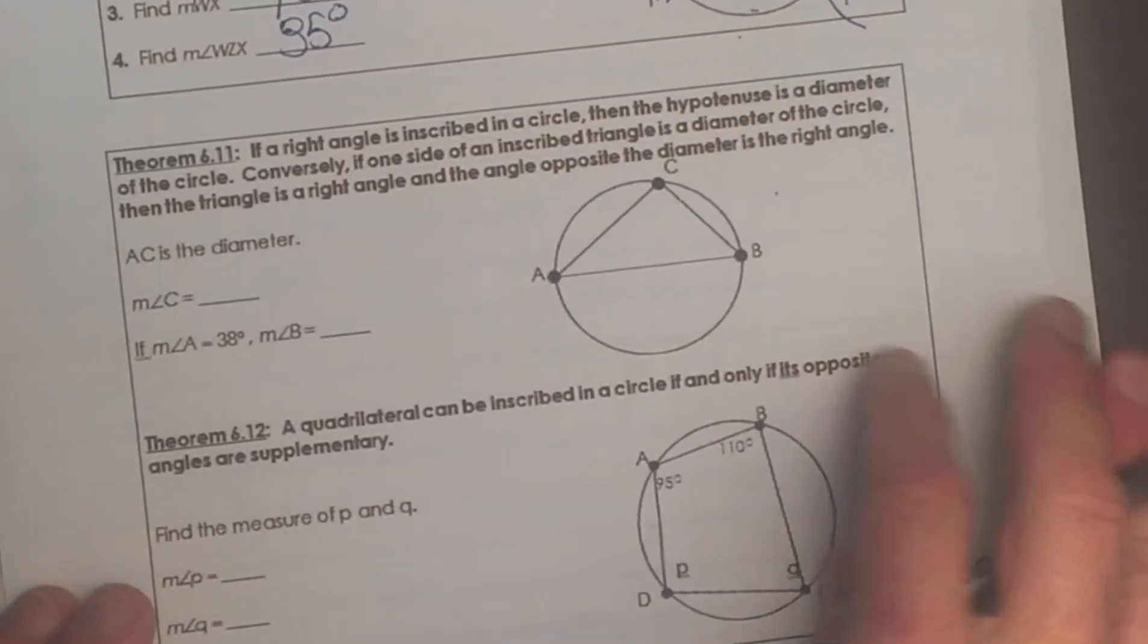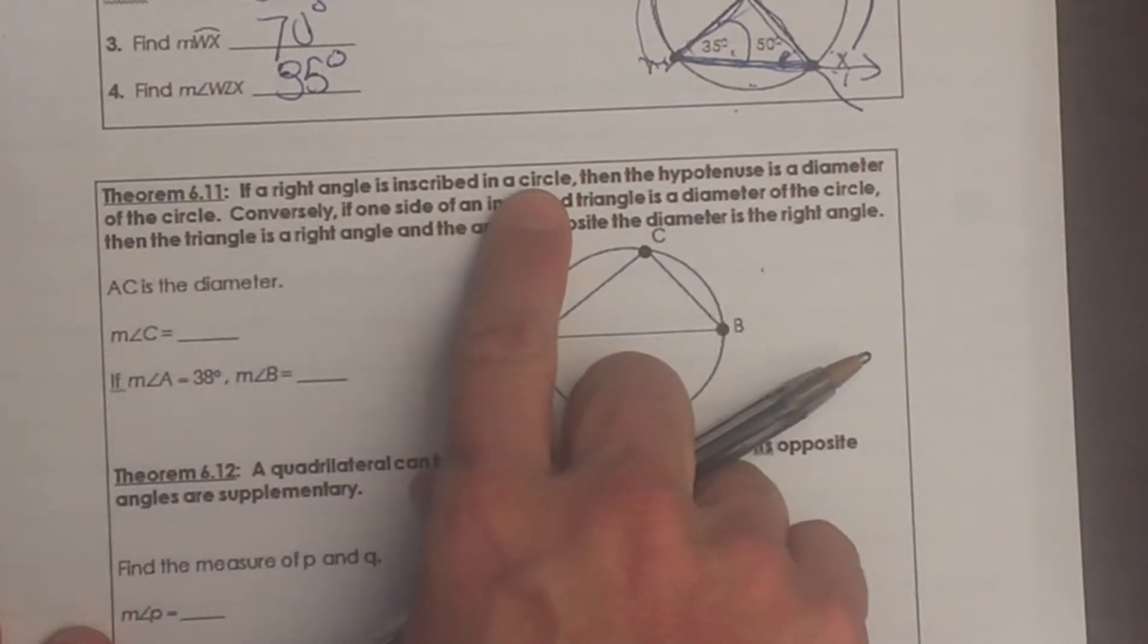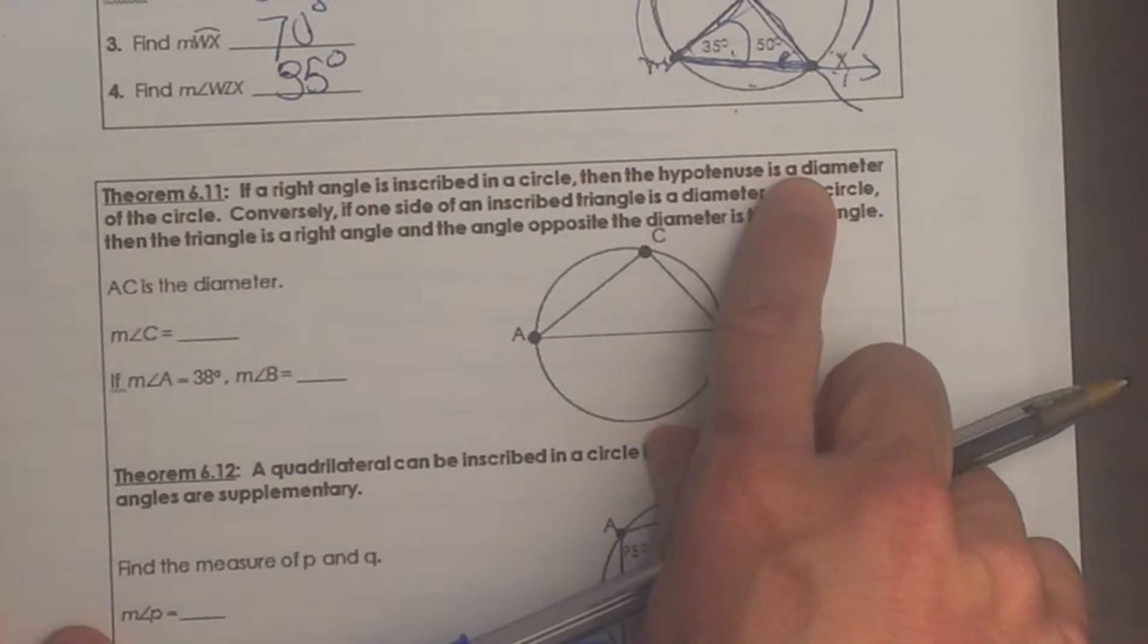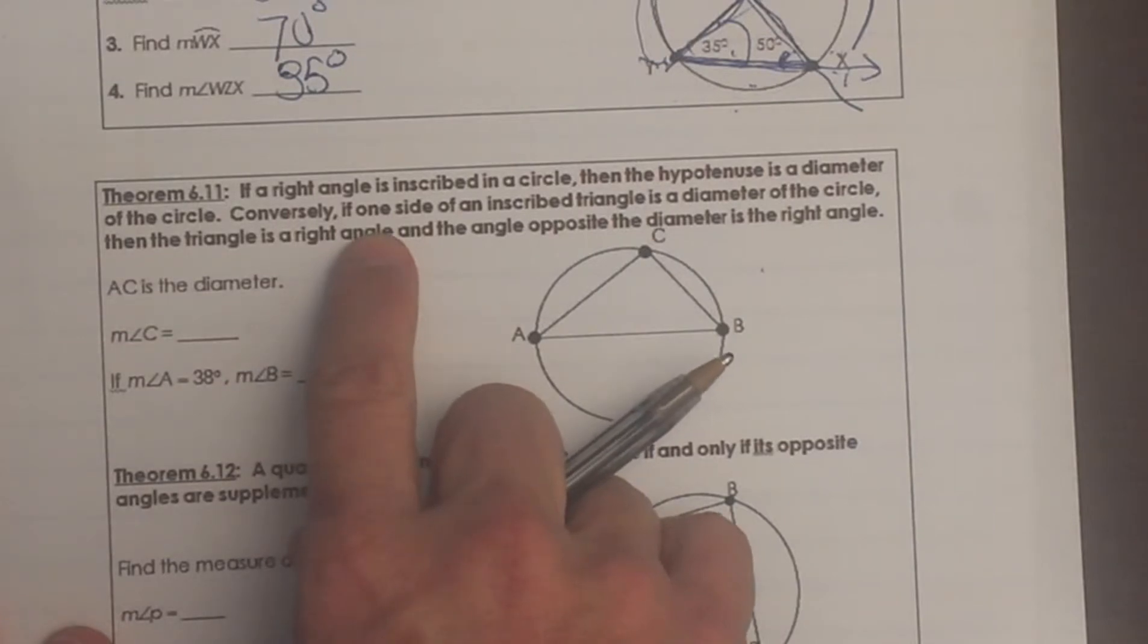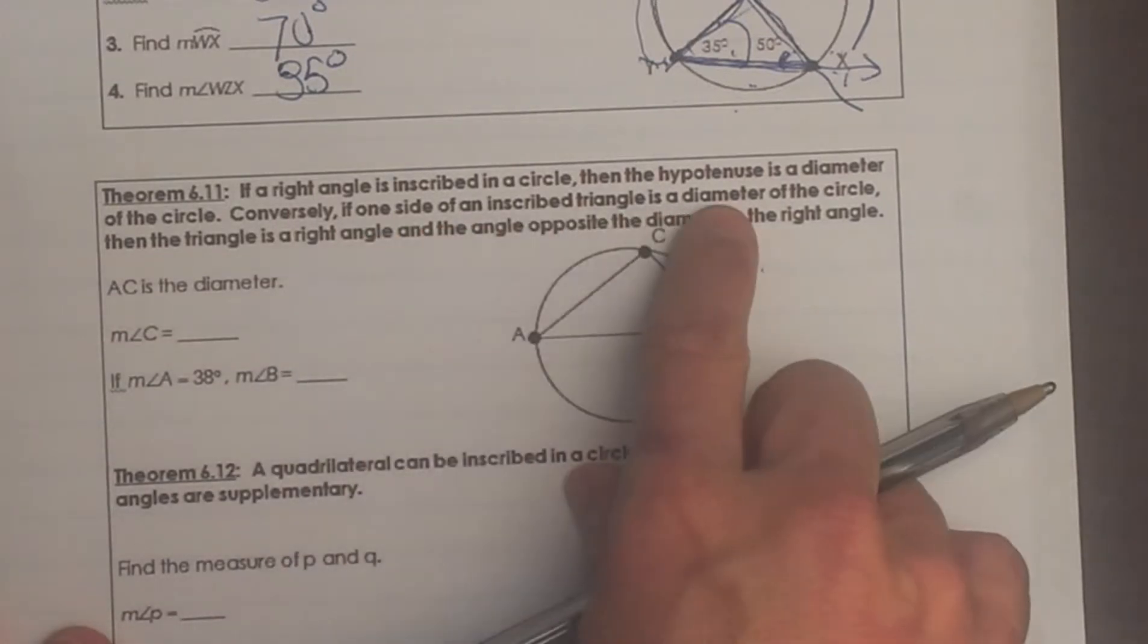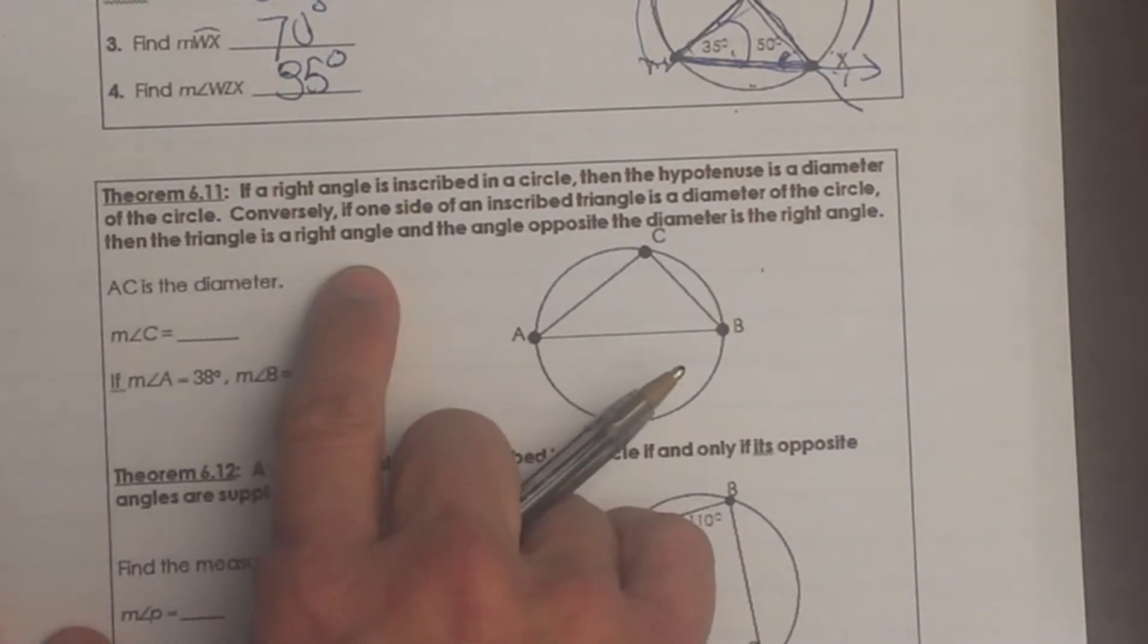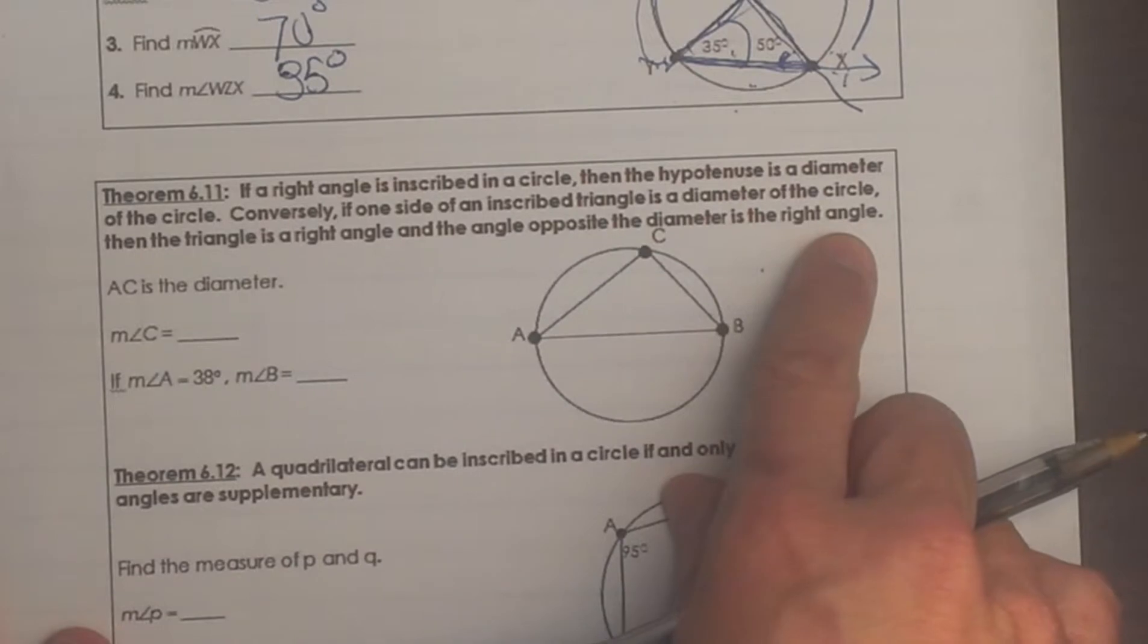Let's look at a couple other ones. Here is another one. If a right angle is inscribed in a circle then the hypotenuse is a diameter. Conversely, which means we are just going to reverse it. If one side of an inscribed triangle is the diameter then the triangle is a right triangle and the angle opposite the diameter must be the right angle.